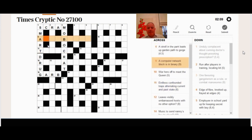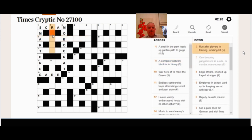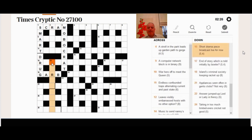Nine across, I don't get this now. We'll come back to it later. A computer network block is in binary. If you can see the definition there and what it means, not just which bit is the definition but what the type of synonym required is, I'm very impressed. It's hard.